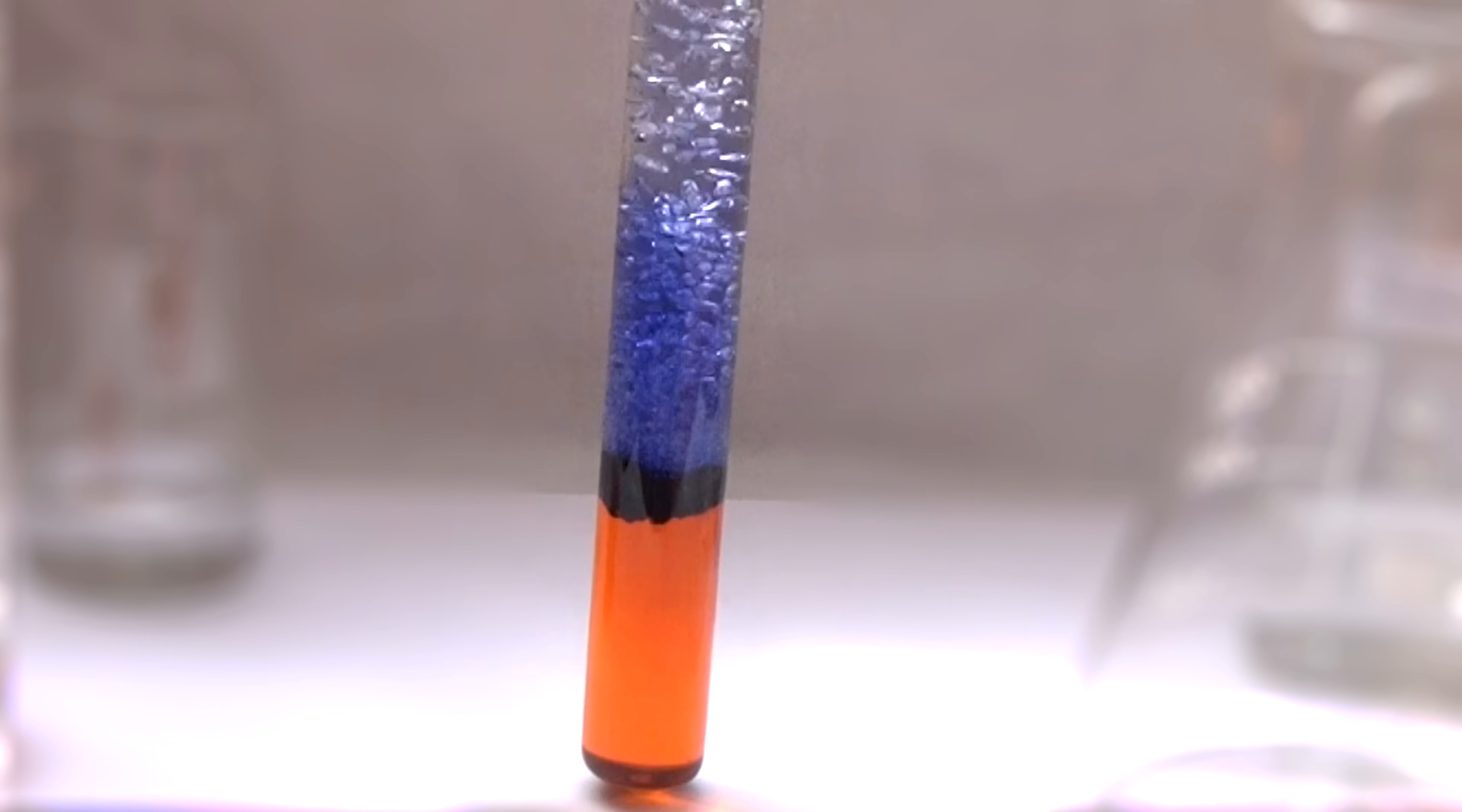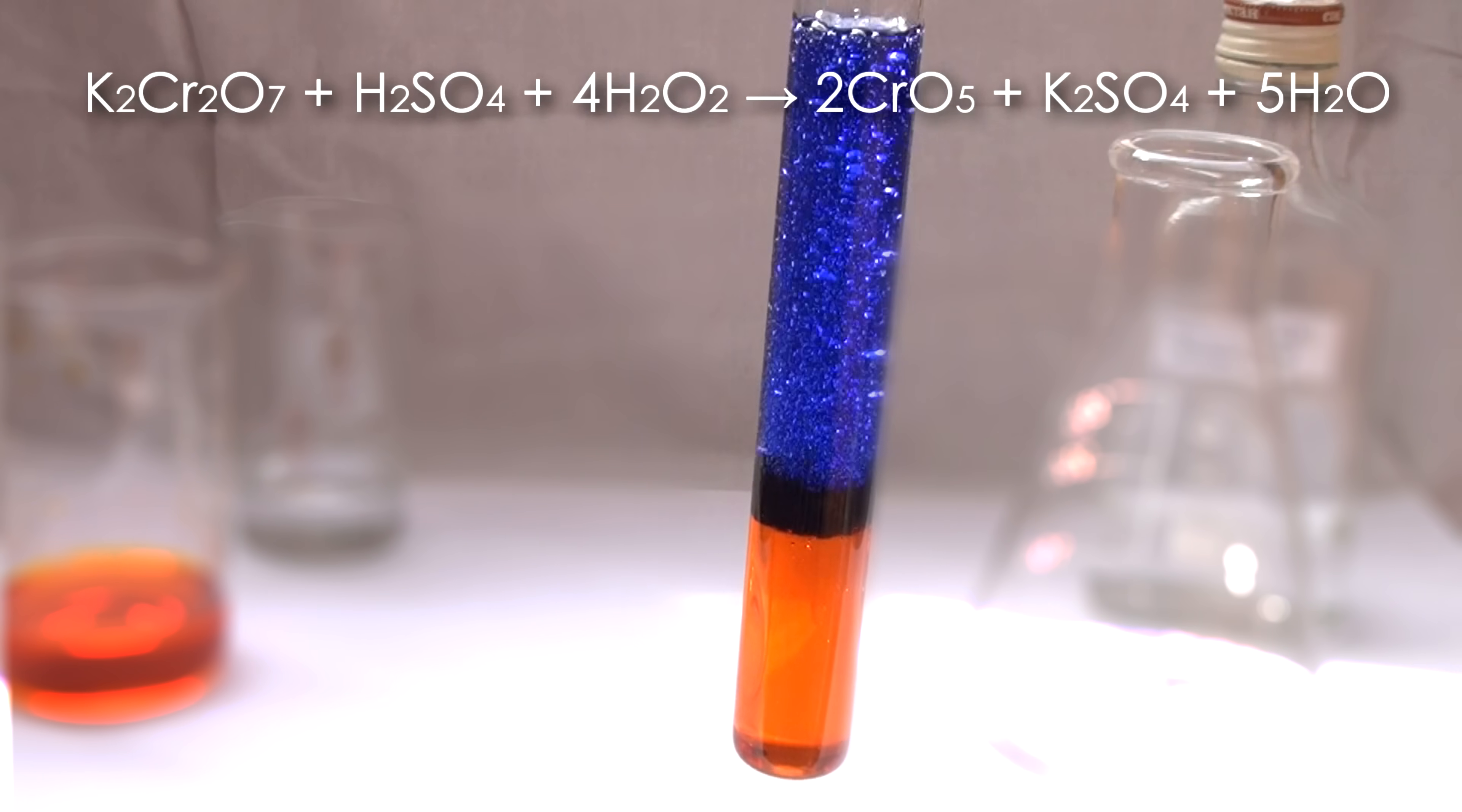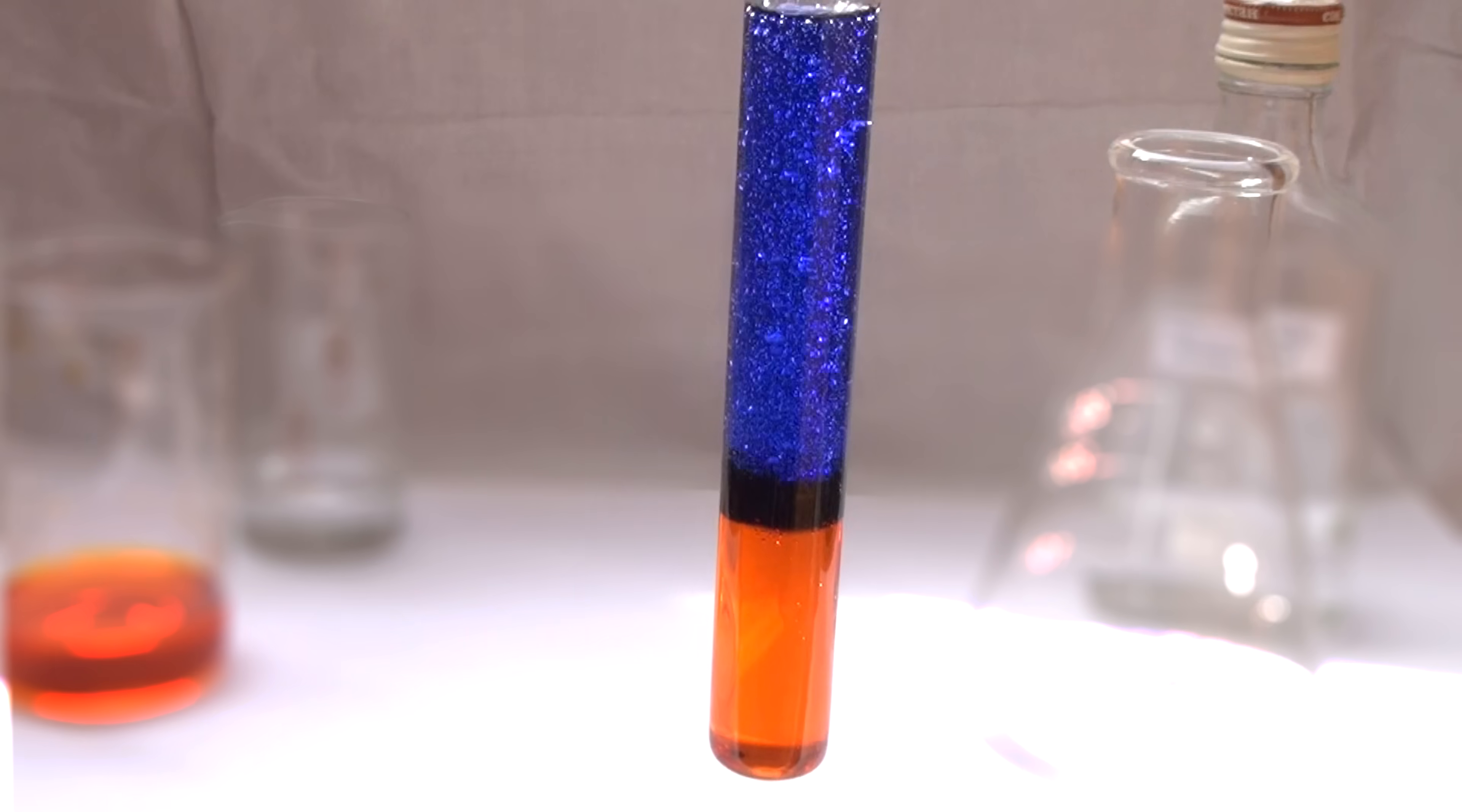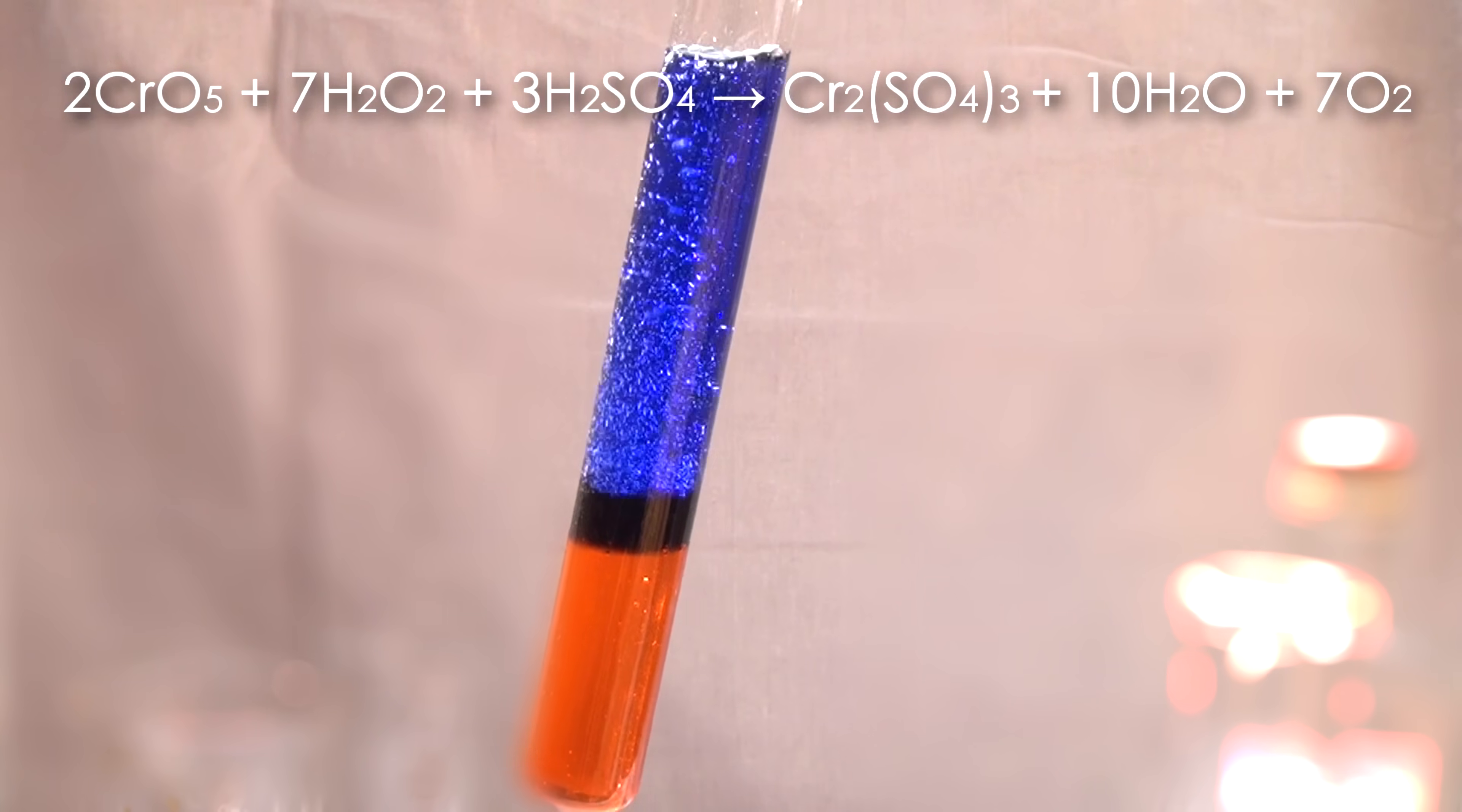And to start the reaction, add a few drops of 20% hydrogen peroxide into the test tube. After adding the hydrogen peroxide, a very interesting transformation occurs. Fluid between the layers of ether and potassium dichromate becomes dark.